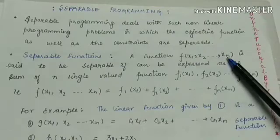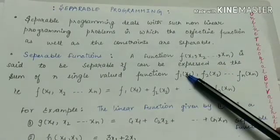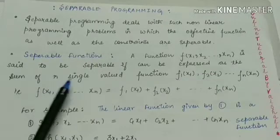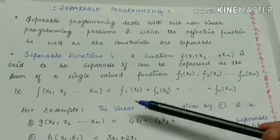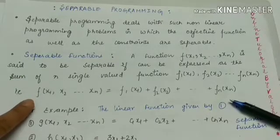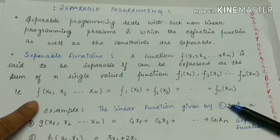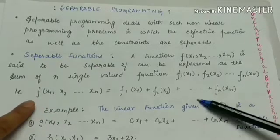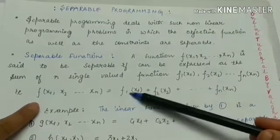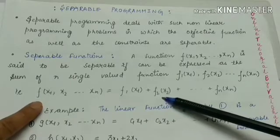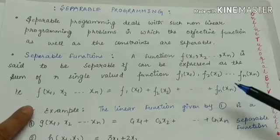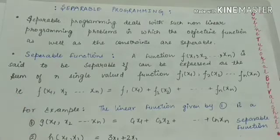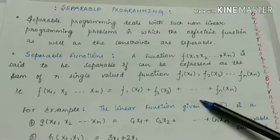A function f depending on variables x1 through xn is said to be separable if it can be expressed as a sum of n single-valued functions: f1(x1) + f2(x2) + ... + fn(xn). A big function f depending on n variables can be written as the sum of small linear functions, each depending on a single variable.